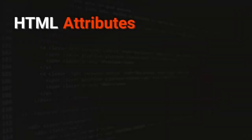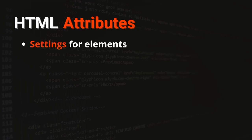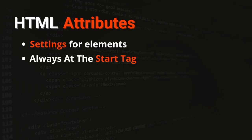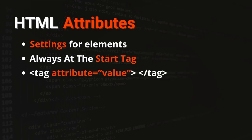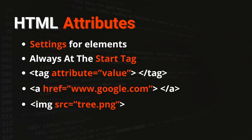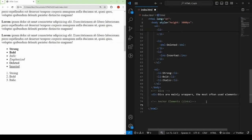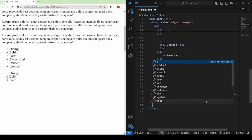Before we get started with the link elements, let's come back to our slides and talk about HTML attributes. What are HTML attributes? Basically they are settings for the elements. There are all types of attributes — for example the image has an attribute called source that says what image you want displayed. They always start at the start tag. The syntax is: tag attribute equals value. Two examples are href="google.com" for a link, and src="3.png" for an image.